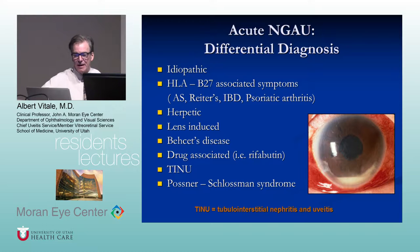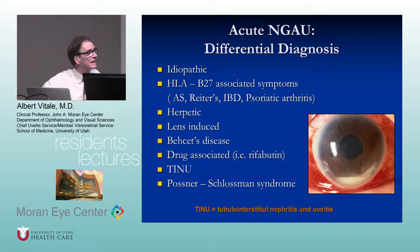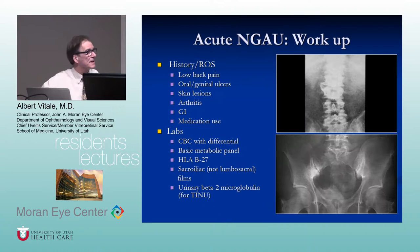Herpes can do anything. Also lens-induced, Behcet's, drug-associated uveitis — always remember drugs as a possible cause of uveitis. Then TINU and Posner-Schlossman syndrome.